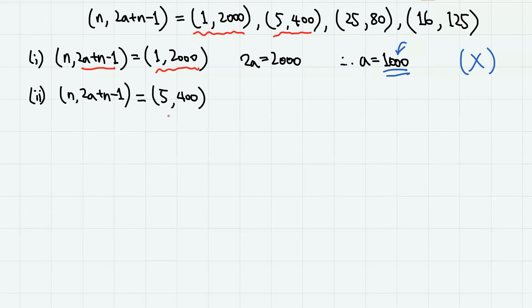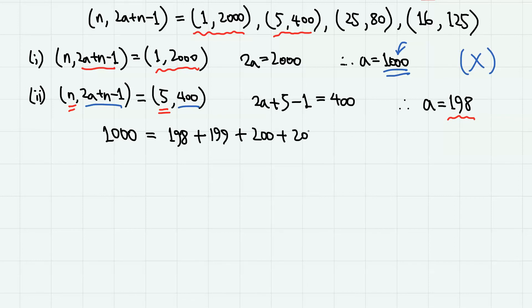Next, when n and 2a plus n minus 1 are 5 and 400, then from here we have 2a plus 5 minus 1 equals 400. Therefore, a equals 198. So there are total 5 terms, and the least of them is 198. Therefore, 1000 can be expressed as the sum of 5 consecutive natural numbers, which is starting from 198 plus 199 plus 200 plus 201 plus 202.